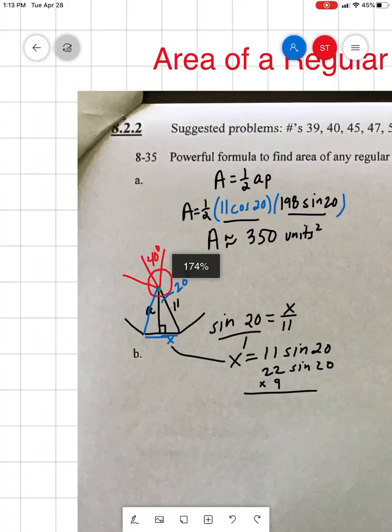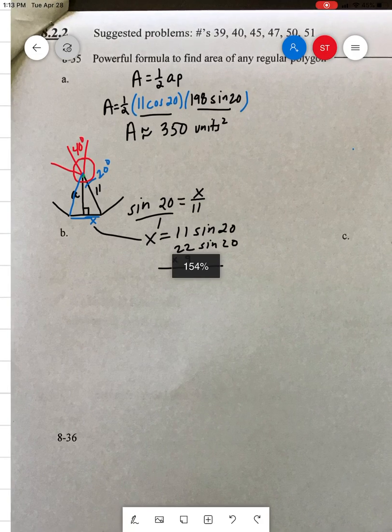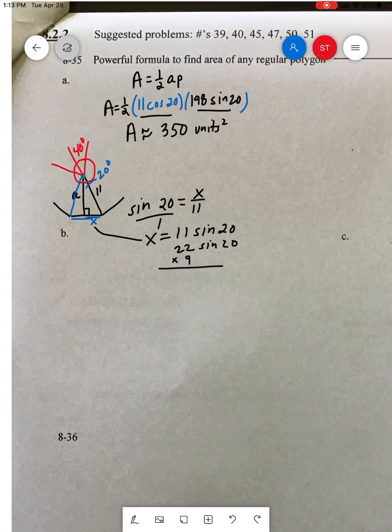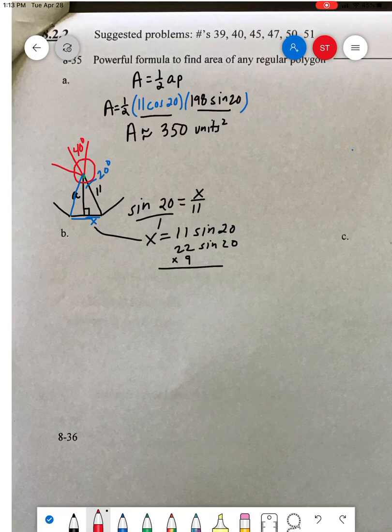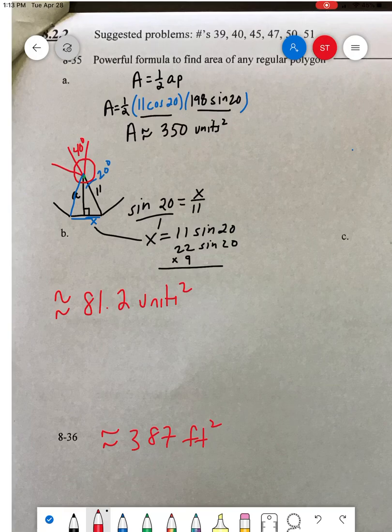Now, just I'll give you the answers for what I already did C for you. So the answer to 36 is about 387 feet squared. Let me know if you want to see those worked out. Until then, take a break.